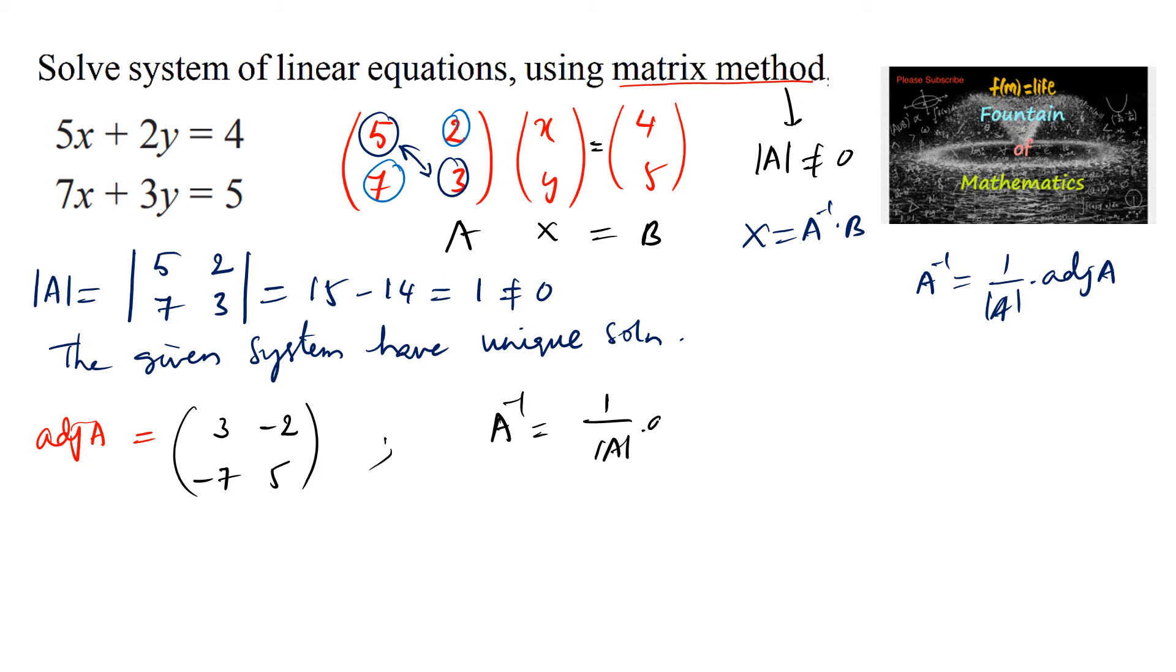Now A inverse equals 1 by |A| into adjoint of A, which equals 1 upon |A| is 1 into adjoint of the matrix [3, -2; -7, 5].